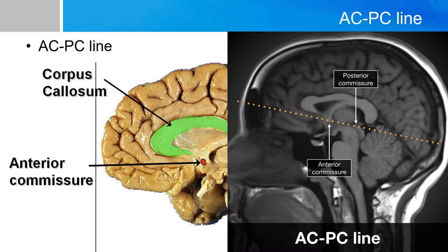The creation of this line has two advantages. First, the creation of the standard imaging plane makes it easier to perform comparisons between scans. Second, this line also follows a path essentially parallel to the hypothalamic sulcus, thereby dividing the thalamus and the hypothalamus.